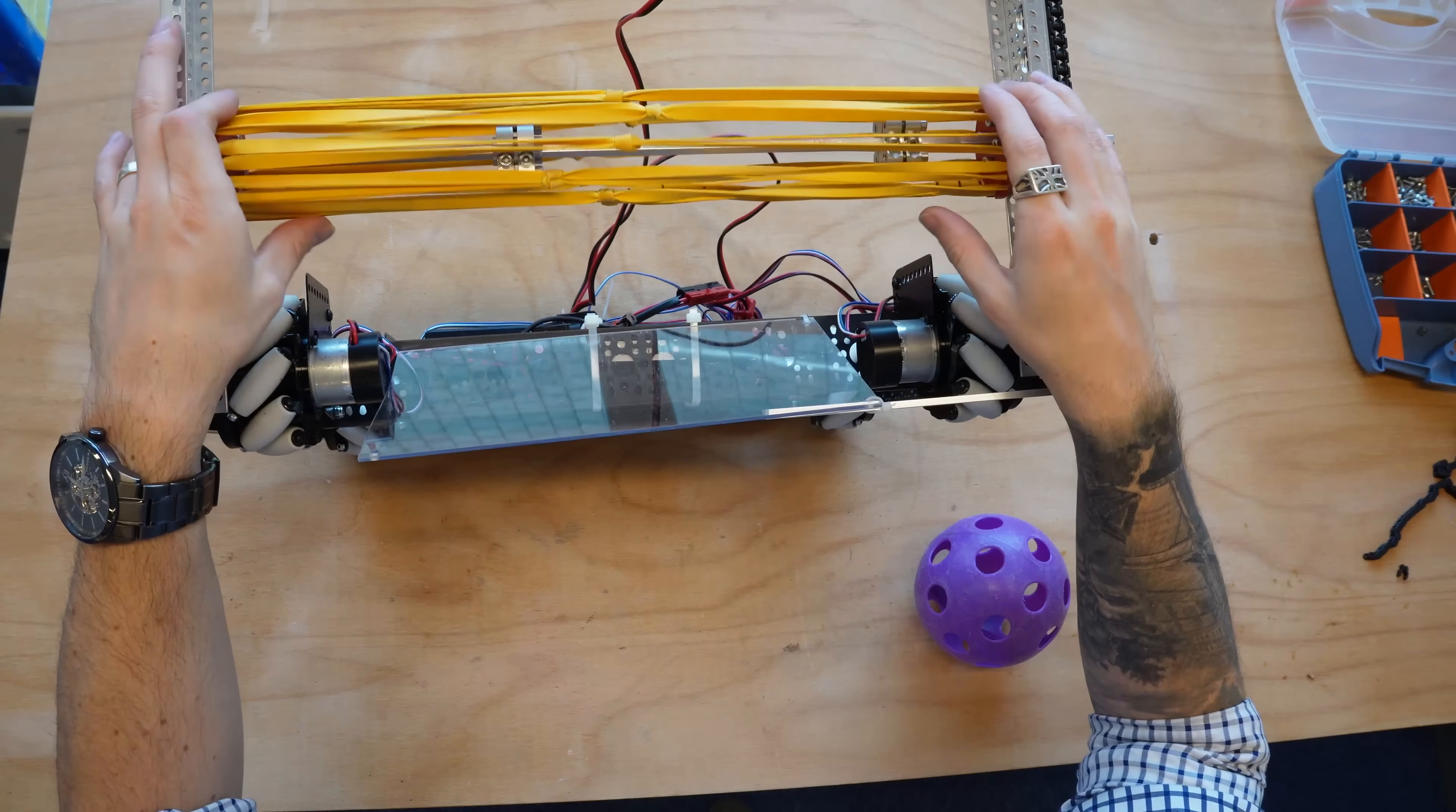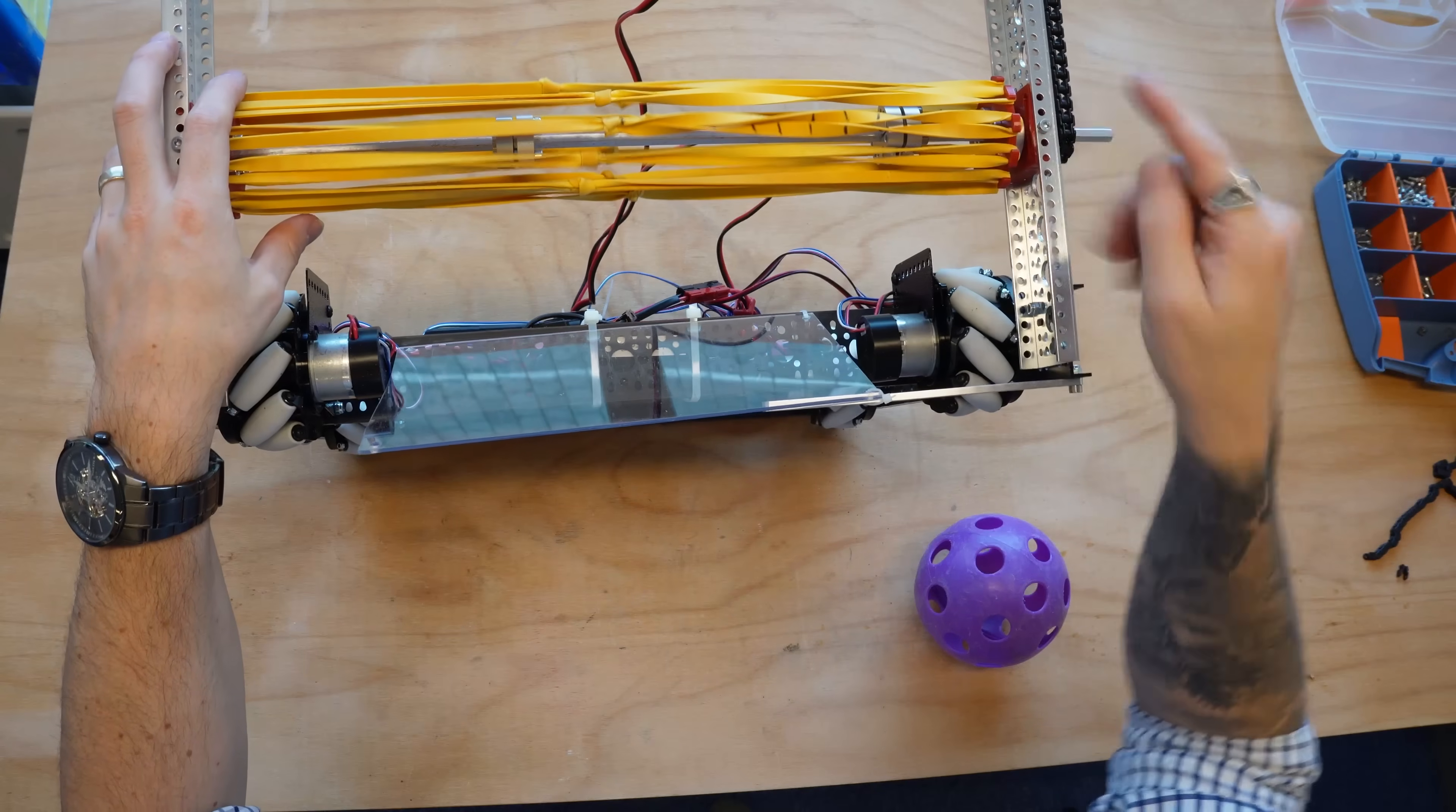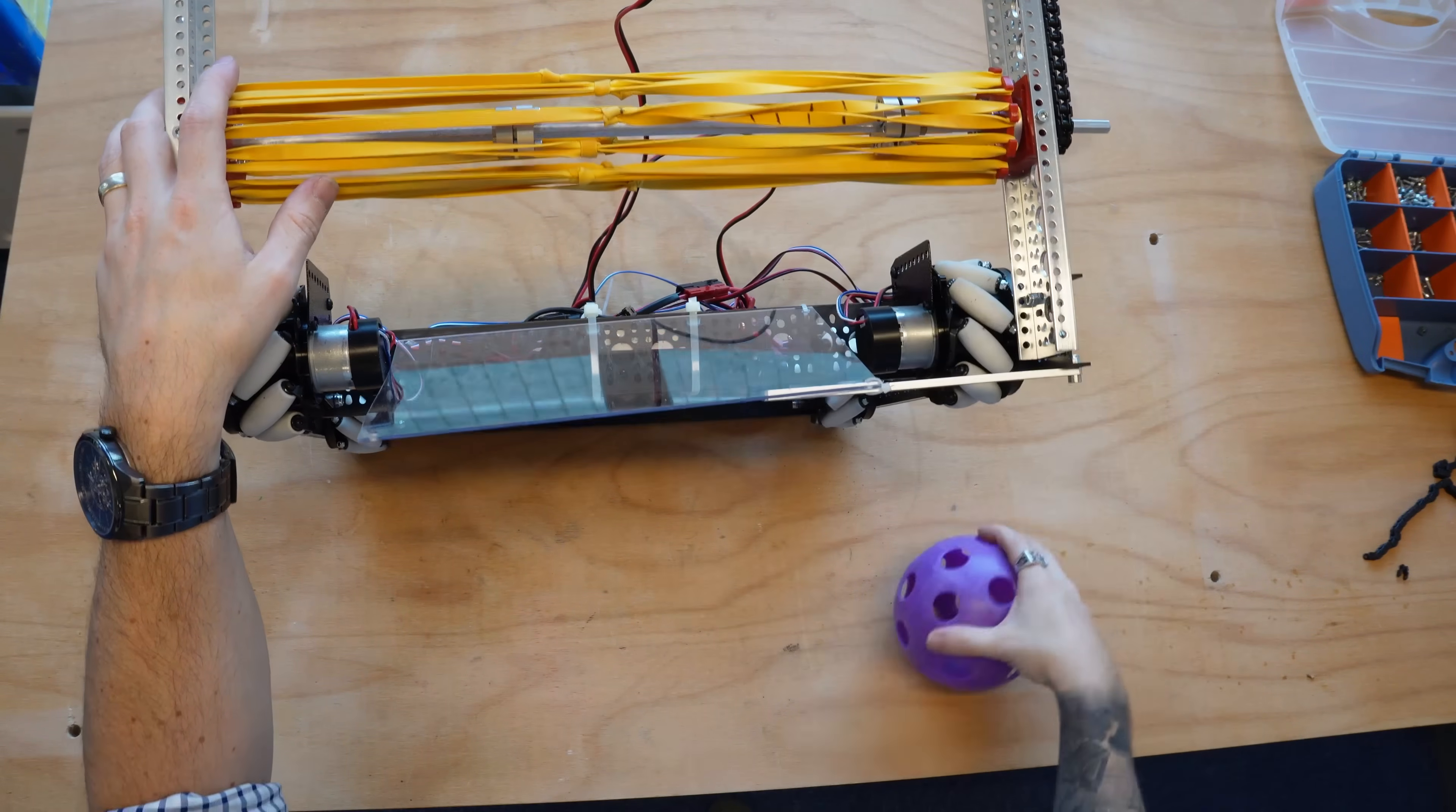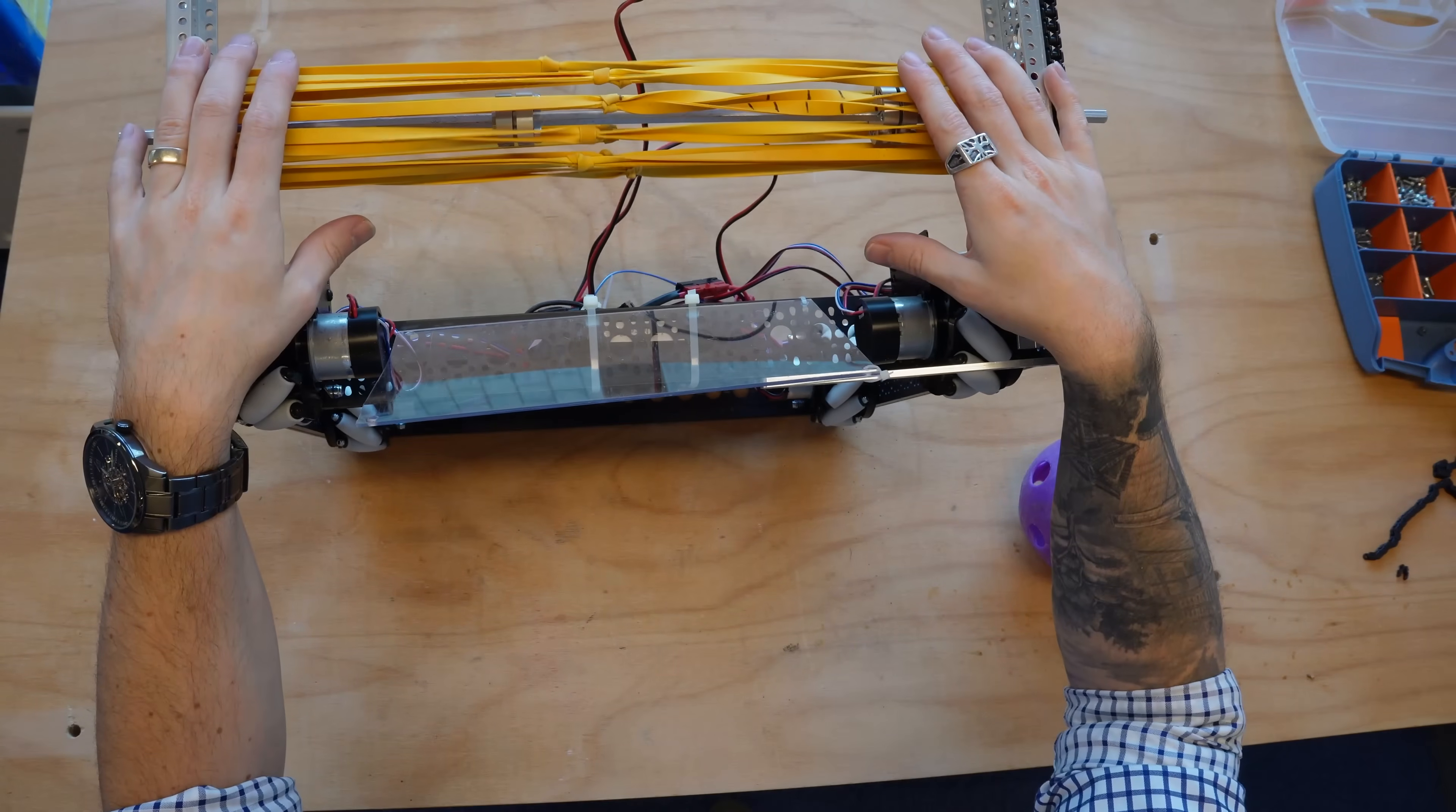But overall, this is a pretty functional intake, and it's a pretty good way of pretty cheaply with some 3D printed parts or some laser cut parts to have an intake that is functional and pick a ball up and off of the ground. So let's go take a look at this in action.